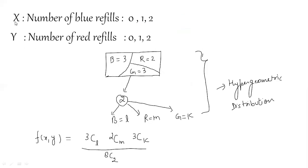So X is given to you. Two can be possible that 2 blue refills get out, or 1 blue refill gets out, or no blue refills get out. So what is the value of x? 0, 1, and 2. The number of red refills is 0, 1, and 2 can be possible.